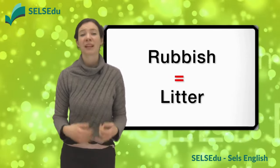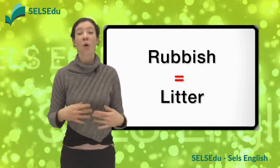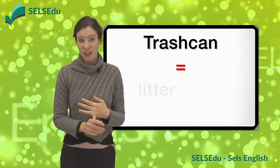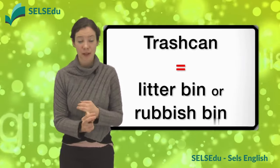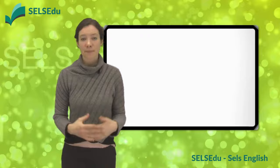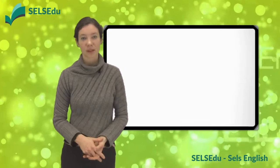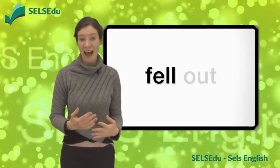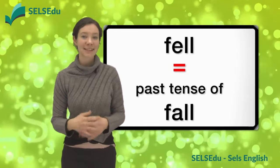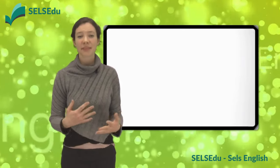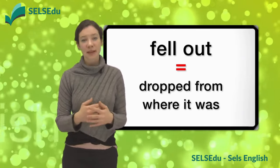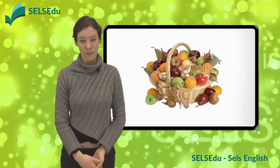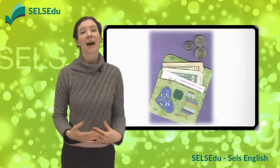Rubbish is litter, like papers, cans, wrappers, or anything that we don't want. Put the rubbish in the bin. A trash can is the same as a litter bin or a rubbish bin. It is a place where we put our rubbish. Put the rubbish in the trash can. Let's look at the words fell out. Fell is the past tense of the word fall. If something fell out, it means that it dropped from where it was. The fruit fell out of the basket. The money fell out of the wallet.